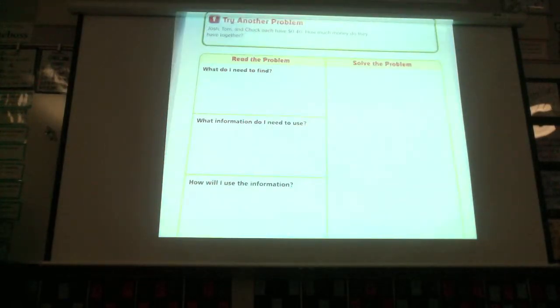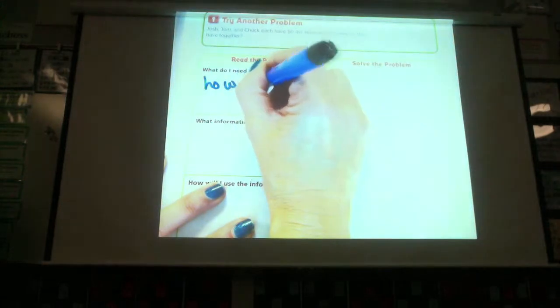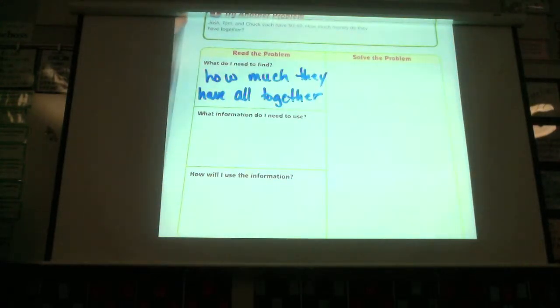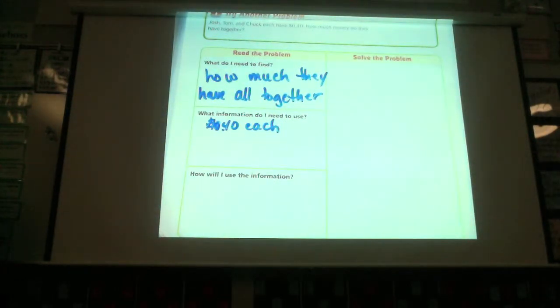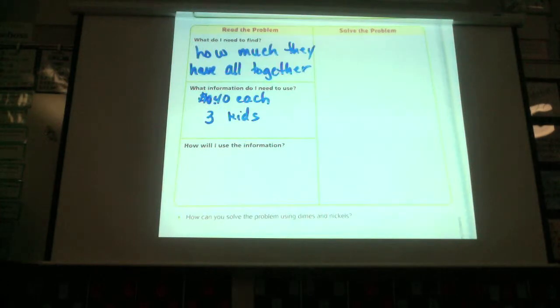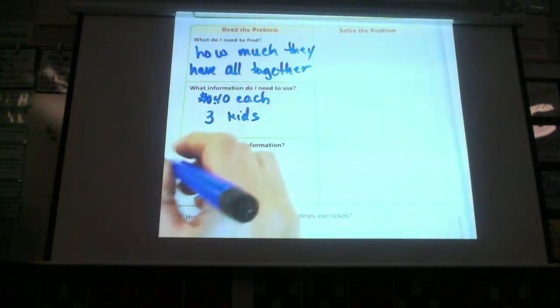Josh, Tom, and Chuck each have forty cents. How much money do they have together? What do I need to find first? How much do they have all together? What information from the question do I need to use? Forty cents each? And how many people are there, class? Two. Three. Three. How will I use this information? Am I going to add, subtract, multiply, divide? What operation am I going to use? Use this information, we're going to do what? Multiply. Multiply. Or, we're going to do it over here with a model.